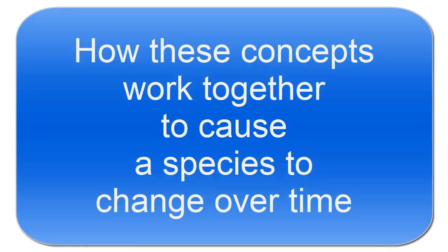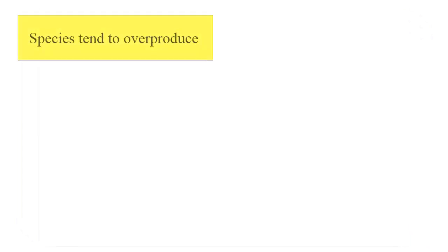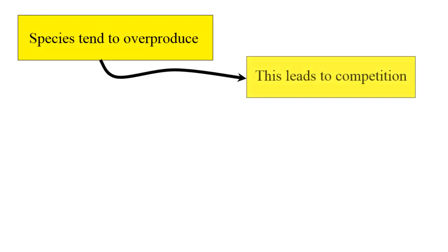So let's go through a flowchart of how these concepts work together to cause species to change over generations. Species tend to overproduce. This leads to competition.